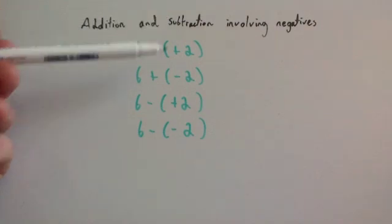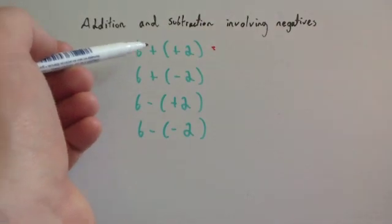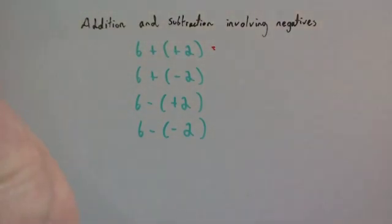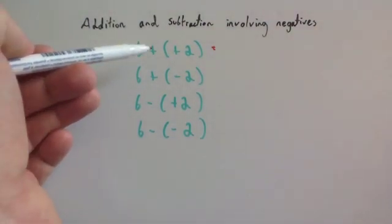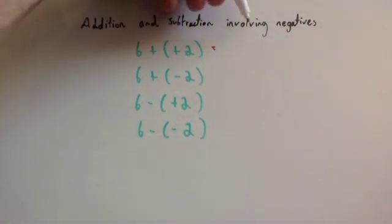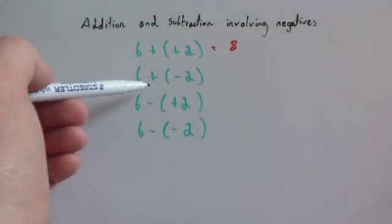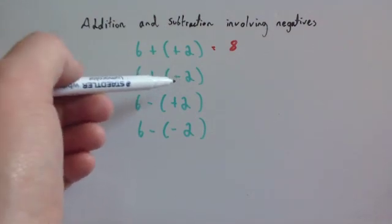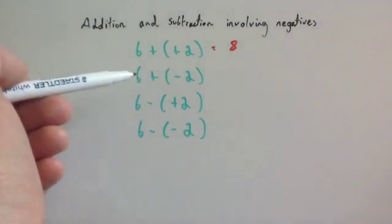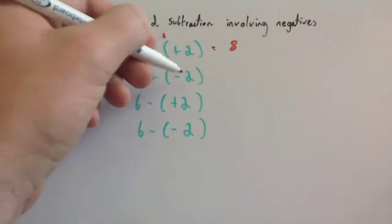Let's look at what happens whenever you have two signs directly beside each other. This is 6 add positive 2. Technically you wouldn't really write it that way — 6 add positive 2 would just be 6 plus 2, which is 8, so you're just adding. Now 6 add minus 2: if you're adding a minus number, it's actually going to get smaller. So when you add minus 2, it actually means you're going to subtract 2, giving 6 subtract 2, which is 4.